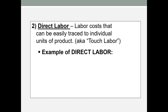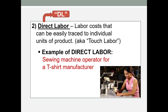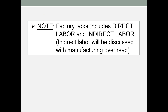Direct labor is the labor cost that can be easily traced to individual units. Sometimes it's called touch labor because workers work hands-on with the product. I will abbreviate this as DL. Examples would be bottlers at Coca-Cola, or sewing machine operators for a t-shirt manufacturer. Note that factory labor includes both direct and indirect labor, and it is important to distinguish between the two.